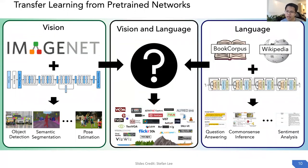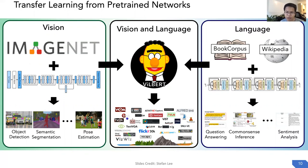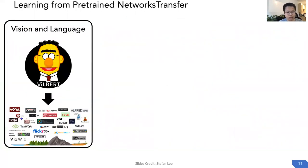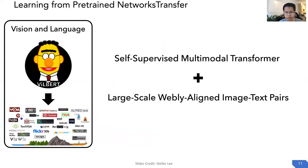In vision and language, we care about groundings, which is the alignment between different modalities. Here we present ViLBERT, which can be pre-trained and transferred to different vision and language downstream tasks. The core of ViLBERT has two parts: first, a self-supervised multimodal transformer; second, it uses large-scale webly-aligned image-text pairs to train the model.